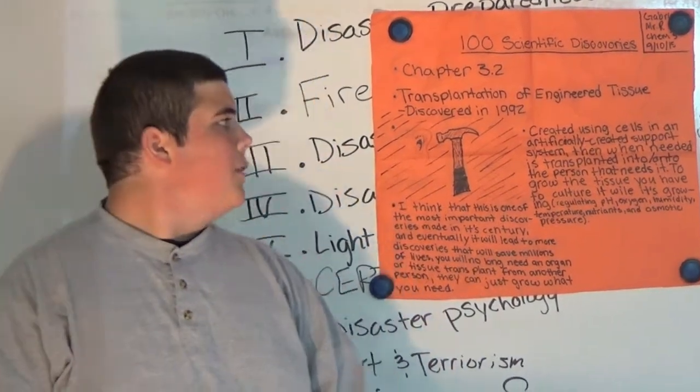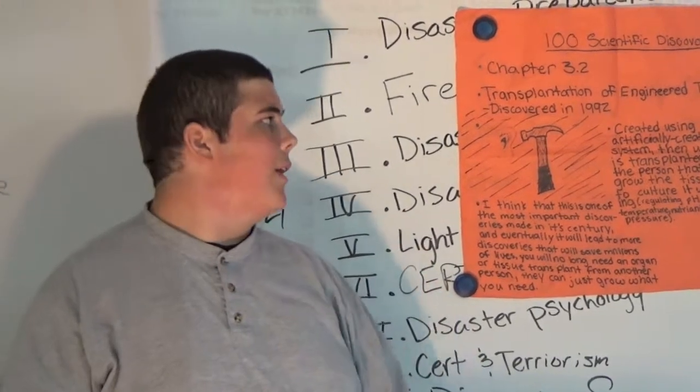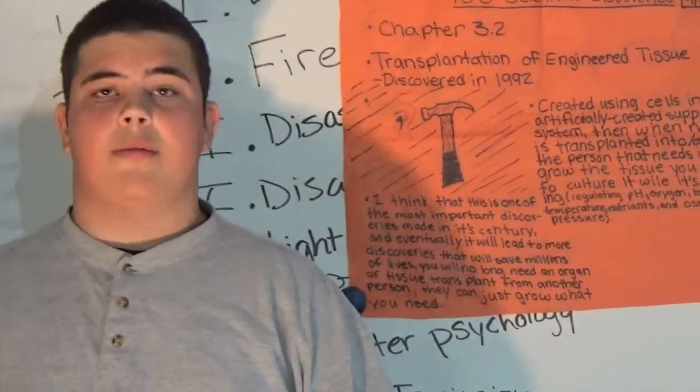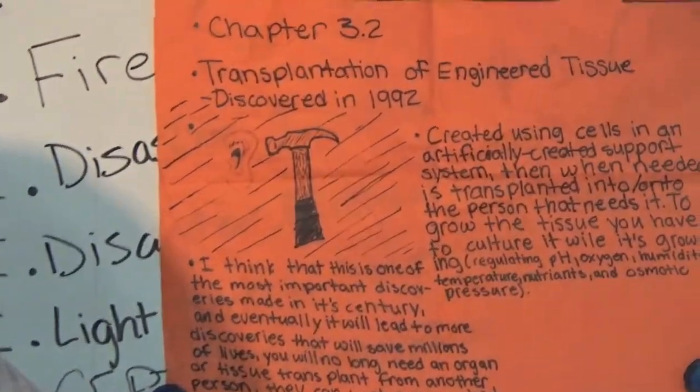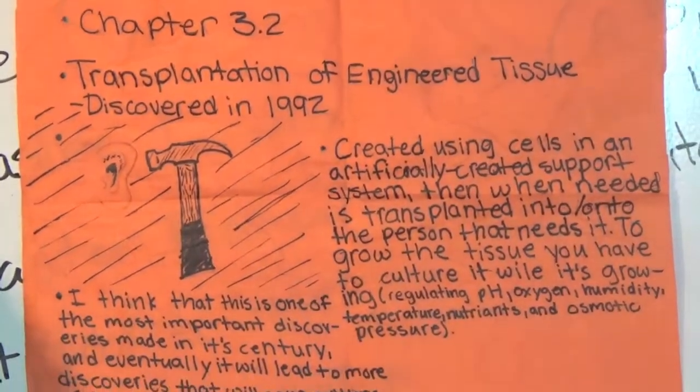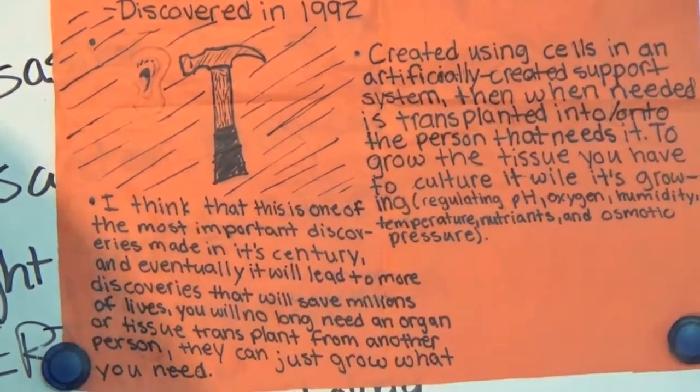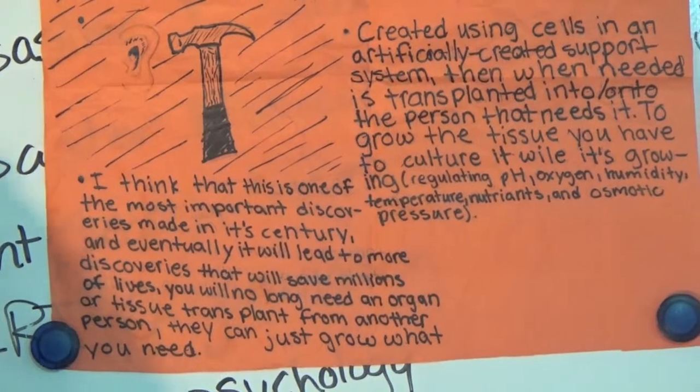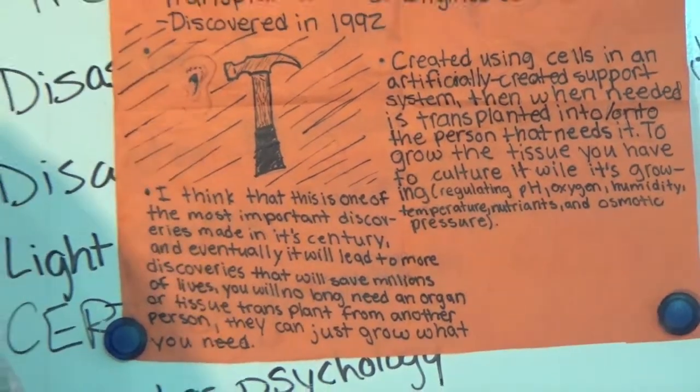Transplantation of engineered tissue was discovered in 1992. It's created by putting cells in an artificial system, like an artificial pancreas or just something that is like a bodily system.